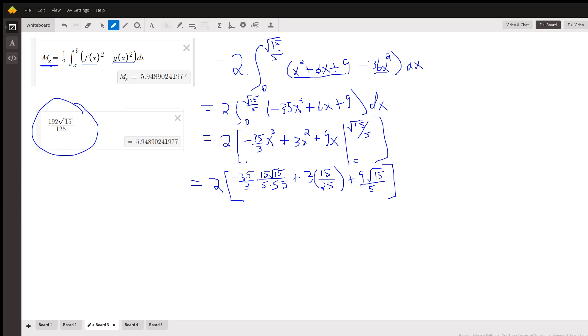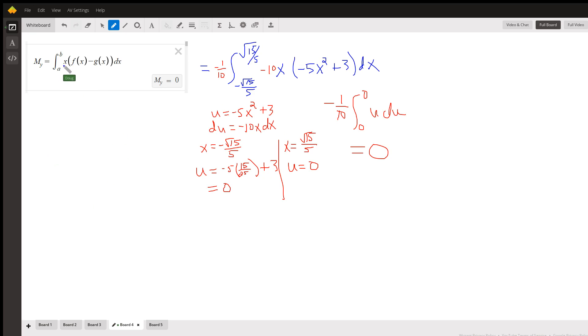For finding M sub y, we want to multiply f of x minus g of x by x. You could distribute that x, but you could also use substitution to get to the answer of 0 a little more quickly.